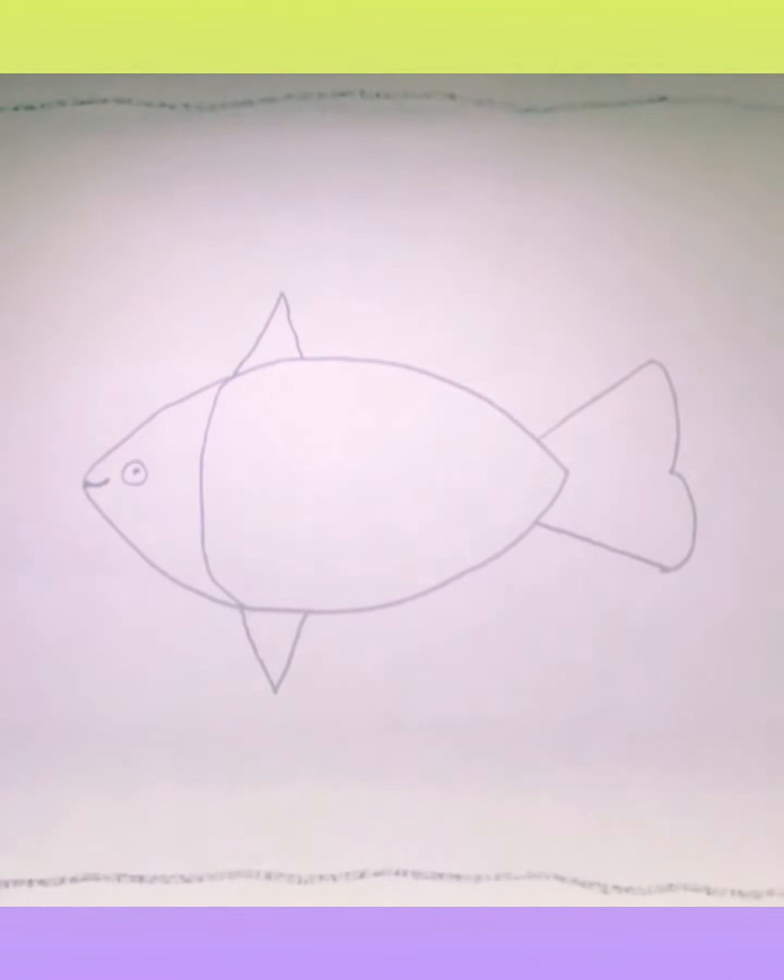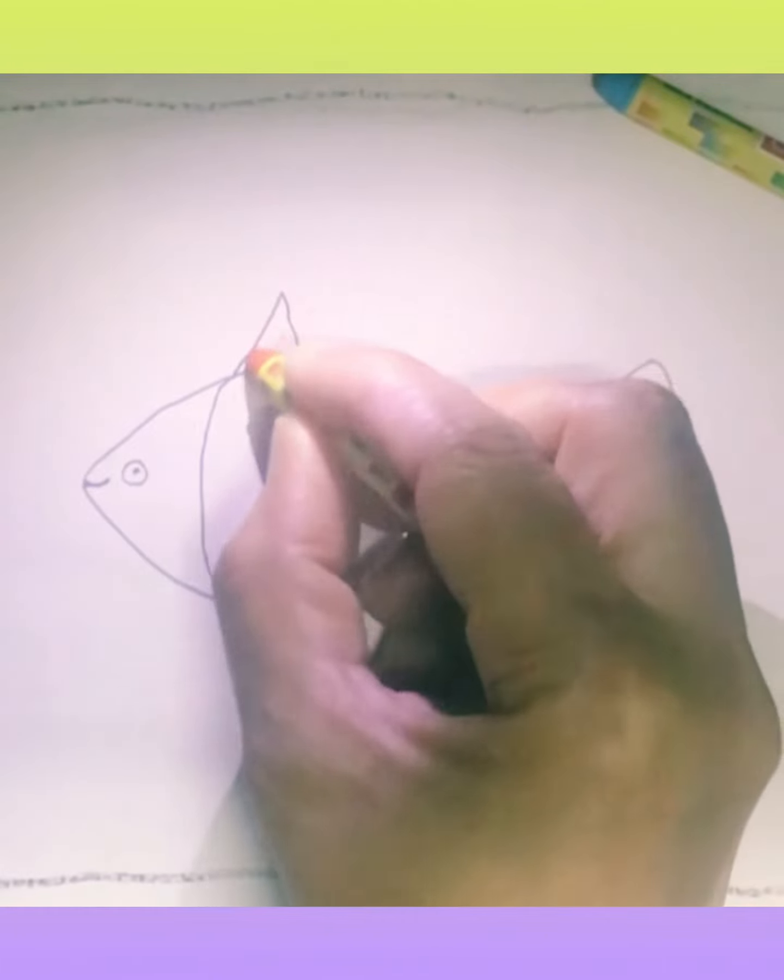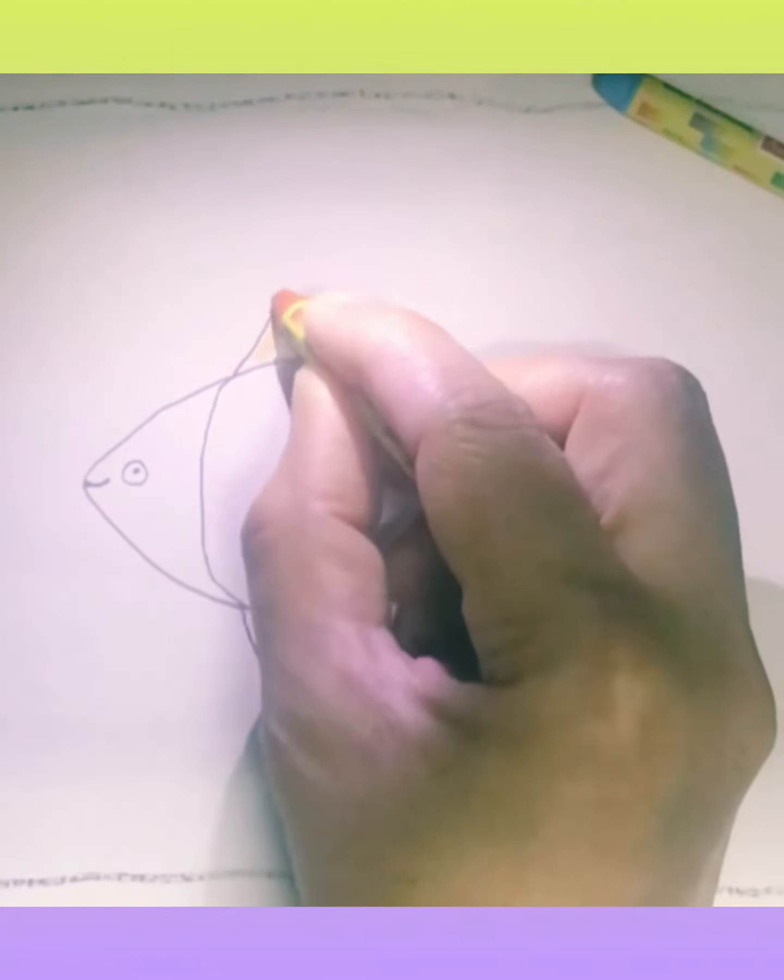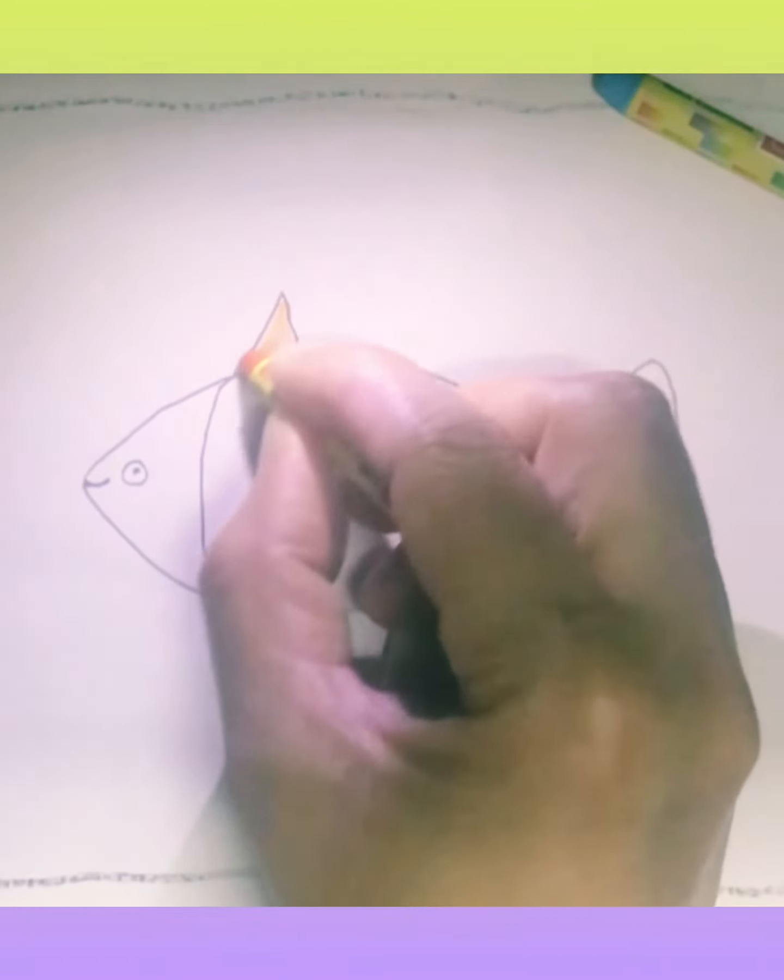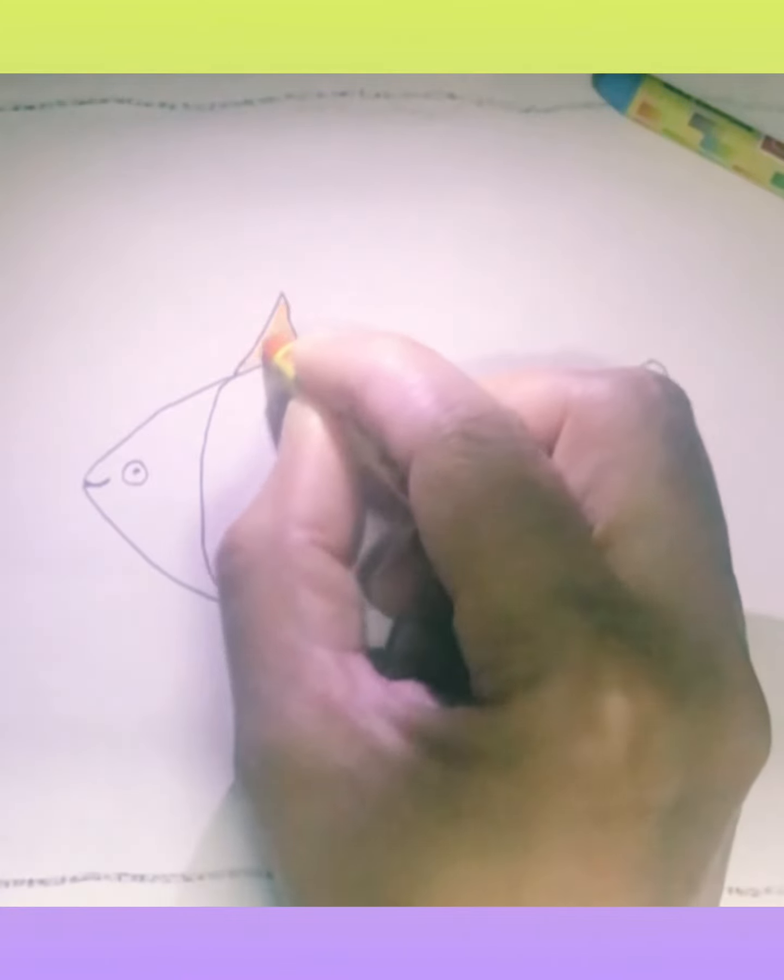Now you can see the fish is ready. Now it's time for coloring. So I'm taking orange color for fins. You can take of your choice.